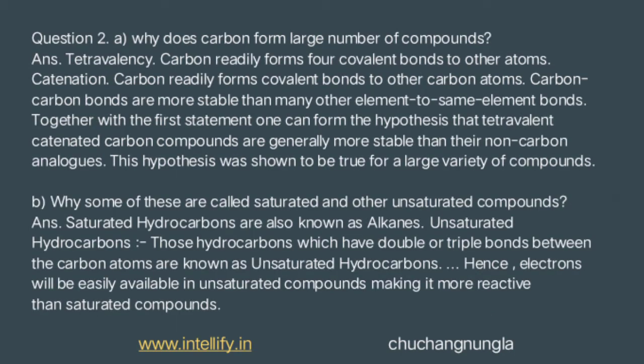Question 2: Why does carbon form a large number of compounds? Carbon forms a large number of compounds due to the following reasons — mainly because of catenation and tetravalency. Catenation is the property of carbon due to which its atoms can join one another to form long carbon chains. Carbon has four valencies, so it is capable of bonding with four other atoms of carbon or other atoms.